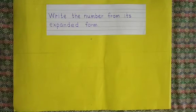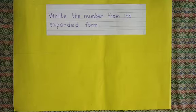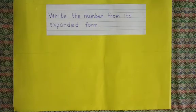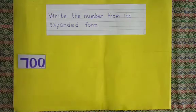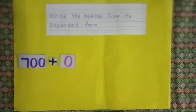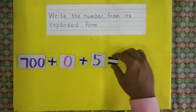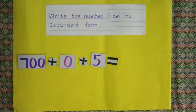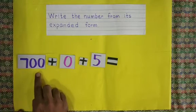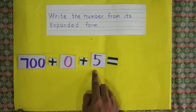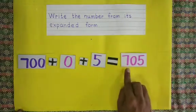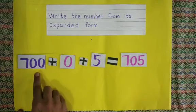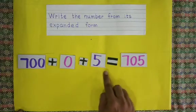Hello students. Now we are going to learn how to make a number, how to write a number from its expanded form. The given expanded form is 700, 0 tens and 5 units. You have to make the number — very easy. If you read, you can write the correct number. 700 and 5, that is 7 hundreds, zero tens and 5 units.